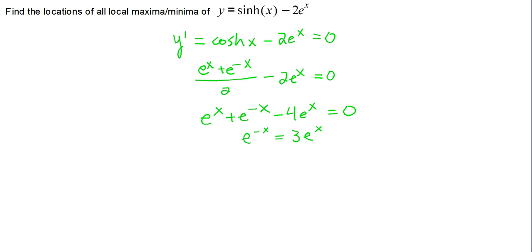And then what we'll need to do next is multiply both sides of this by e to the x. And if we do that, we end up with, on the left-hand side, 1. And on the right-hand side, 3e to the x plus x, or 3e to the 2x. The left-hand side was e to the x plus negative x, which is e to the 0, so just 1. And we get 1 third equals e to the 2x.